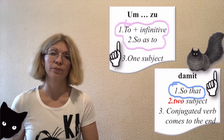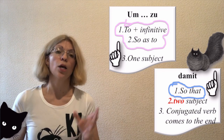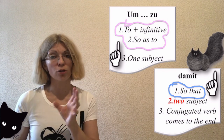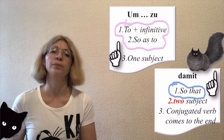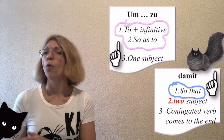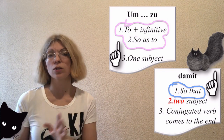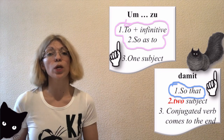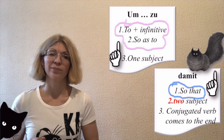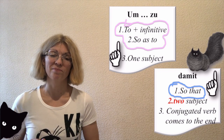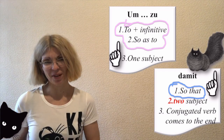Let's summarize: 'um zu' means 'to + infinitive' or 'so as to', and requires one subject. 'Damit' means 'so that', and requires two different subjects. We can't use 'wollen' and 'sollen' in subordinate clauses — instead we use 'können'. Thank you for watching, have a nice day, bye!